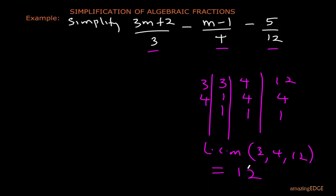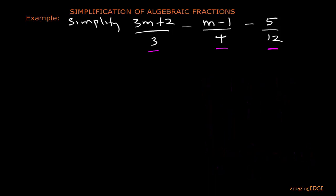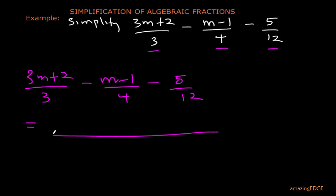So the first thing is to get the LCM, and now we have gotten the LCM. So we proceed to do the necessary subtractions that are there. So we proceed as follows. So we now have that (3m+2)/3 - (m-1)/4 - 5/12 is now equals to, so write the dividing line.